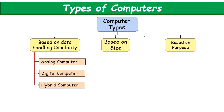First is based on data handling capability. We can divide it into three categories: one is analog computer, digital computer, and hybrid computer. In this tutorial we will cover only these three. The rest — based on size and purpose — we will cover in the next video.